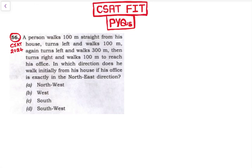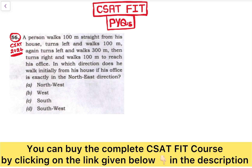Hello friends, welcome to CSAT with PYQs. This is a question asked in CSAT 2024 from the direction topic. The question is: a person walks 100 meters straight from his house. Let's take this is his house — he is walking in this direction, so this is 100 meters. Then he turns left.